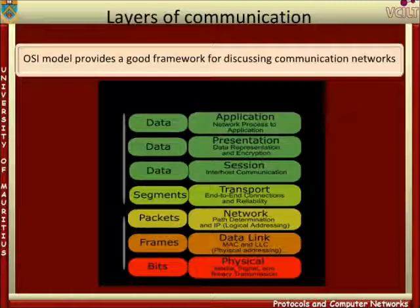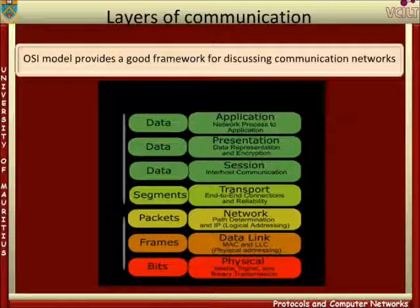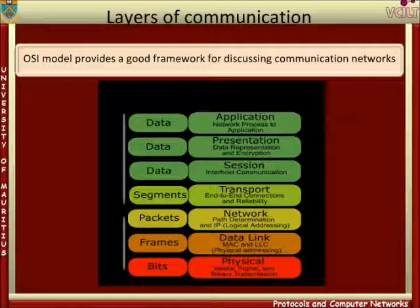Physical layer: it provides the mechanical, electrical, and procedural means for transmitting bits over a communication medium. Data Link layer: it provides services for the transmission of data between directly connected systems in a communication network. Network layer: it handles the routing of data through communication networks. Transport layer: it provides reliable end-to-end services without being concerned about the route through communication networks.